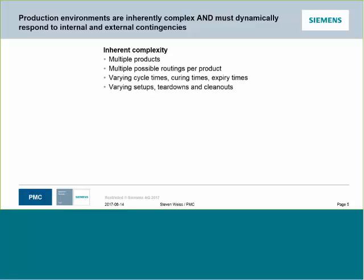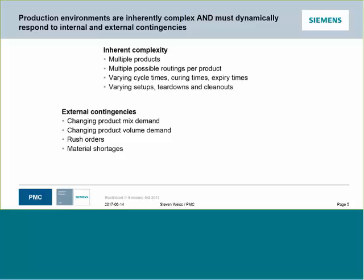So a production controller who's asked to put together a feasible schedule would face a certain degree of inherent complexity. But it's also a dynamic environment with external contingencies — things outside of the facility are going to change. There's going to be, over time, changing product mix as new products are introduced, some are discontinued, and also changing product volume demand. The specific types of orders one sees early in the year might change late in the year or even the next month.